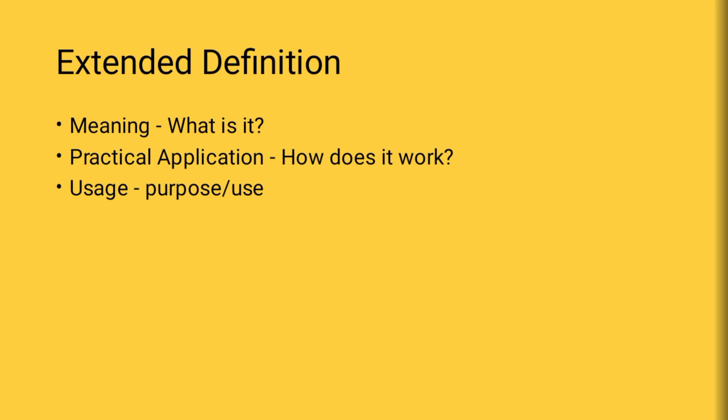When you explain a particular object or gadget, you have to give more details about it. There are three important details essential in an extended definition. The first thing is you have to explain the meaning of it — define what it is.